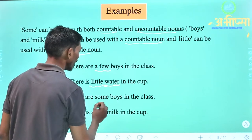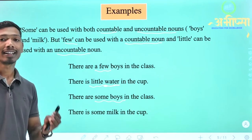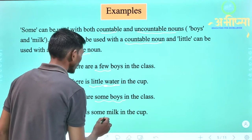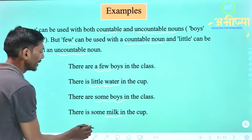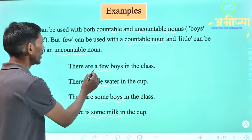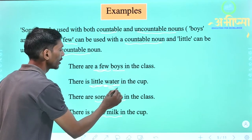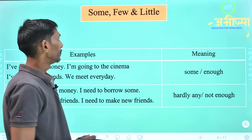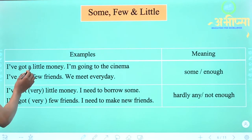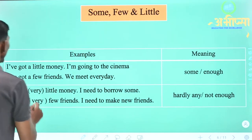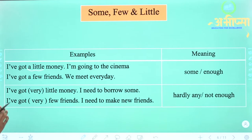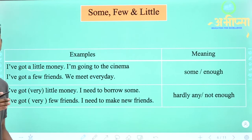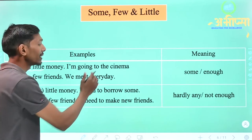Next, 'There are some boys in the class' — yaani kaksha mein kuch ladke hain. Boys ko hum gin sakte hain, isliye yahan par humne 'some' ka use kiya. Vaisi hi, 'There is some milk in the cup' — yaani yahan pe cup mein kuch doodh hai. Milk ko hum nahi gin sakte, yahan pe some ka use hua hai. Is tarah se humne dekha ki 'a few' ka use countable noun ke saath, 'little' ka use uncountable noun ke saath, and 'some' ka use countable and uncountable dono noun ke saath kar sakte hain.